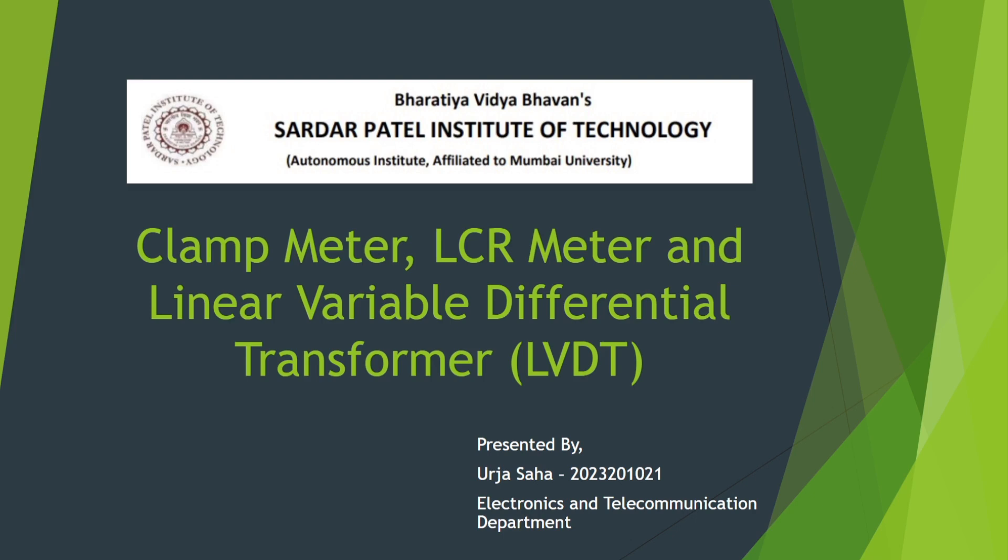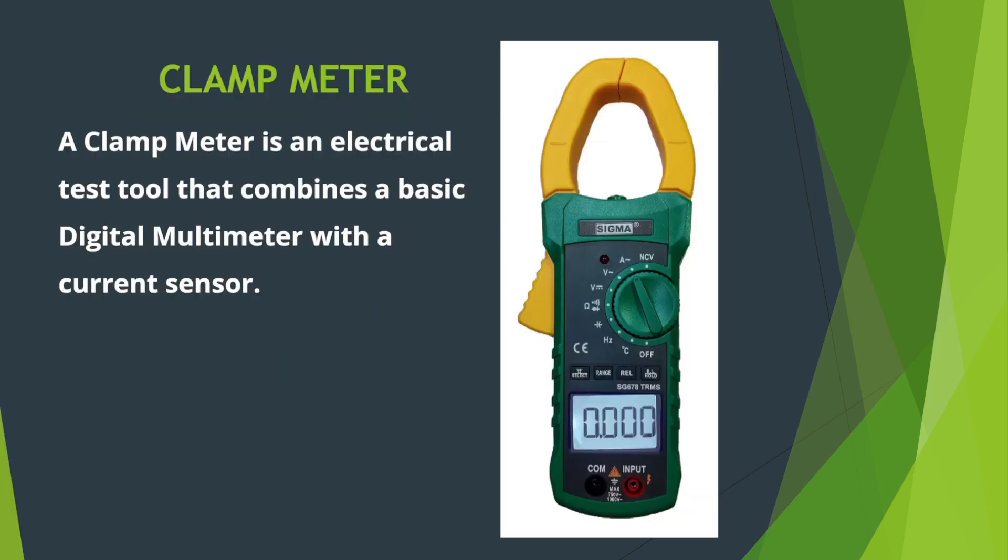What is a clamp meter? Clamp meters are electrical test instruments utilized for measuring current without connection to a circuit in series. They can easily be used and operated to measure live conductors without causing damage or loss of power. In short, they are devices used for safe and convenient current measurement.